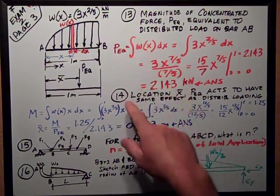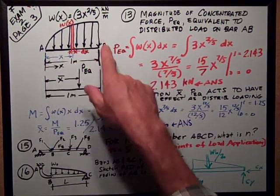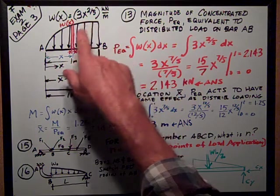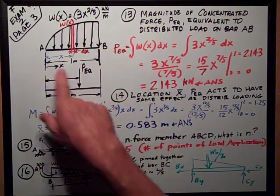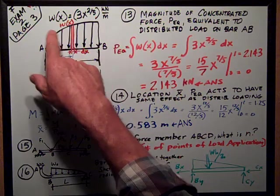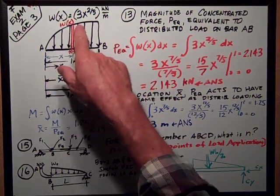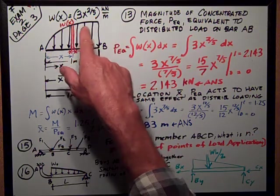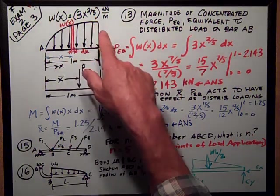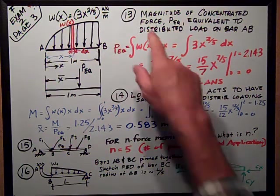Problem 13 and 14 were related. They had to do with this distributed load with this function of x as measured from the left end to give you the value of the distributed load at any point. The value that I've selected for this is 3x to the two-fifths power kilonewtons per meter. Problem 13, the first part was the magnitude.